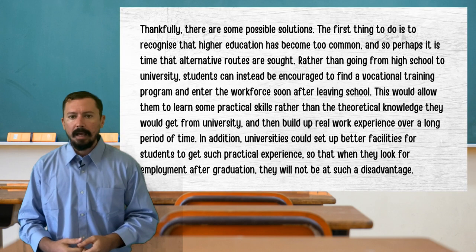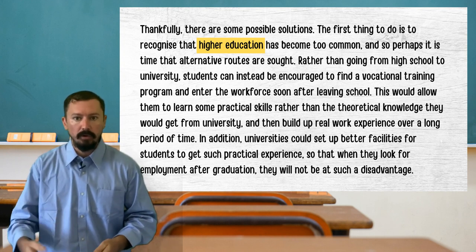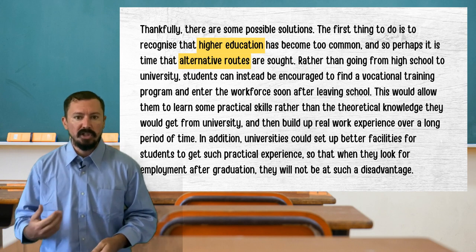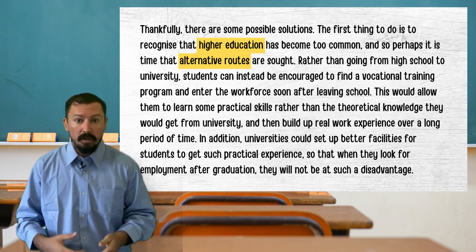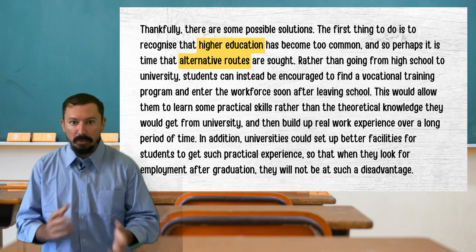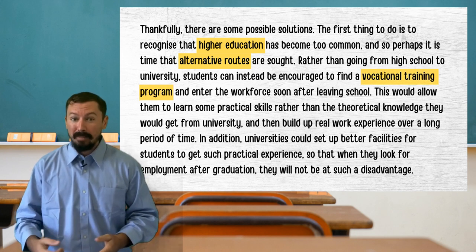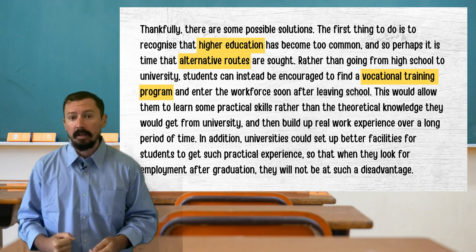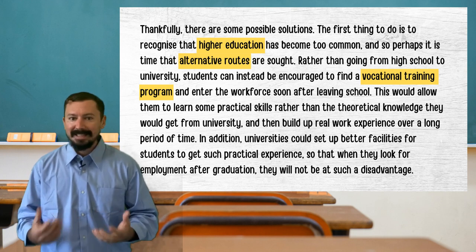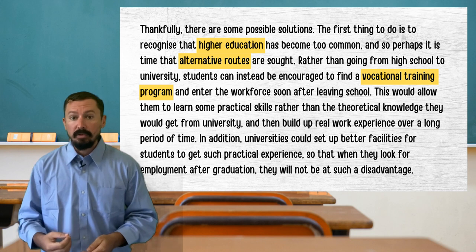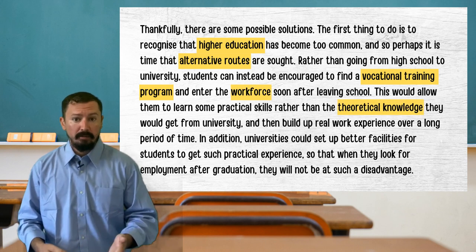If we look at paragraph three, we can see some examples of this. The phrase 'higher education' is used rather than repeating 'university' over and over. 'Alternative routes' is used to suggest going another way into employment. Importantly, this is a natural phrase that a native speaker would know, rather than an awkward expression cobbled together from words we would not intuitively use. The phrase 'vocational training program' is excellent because it is a really topic-specific phrase. It falls into the category of uncommon vocabulary, but it is not some insanely obscure phrase. This is the sort of language you should aim for: accurate and relevant. Beyond that, we have 'workforce' and 'theoretical knowledge.'